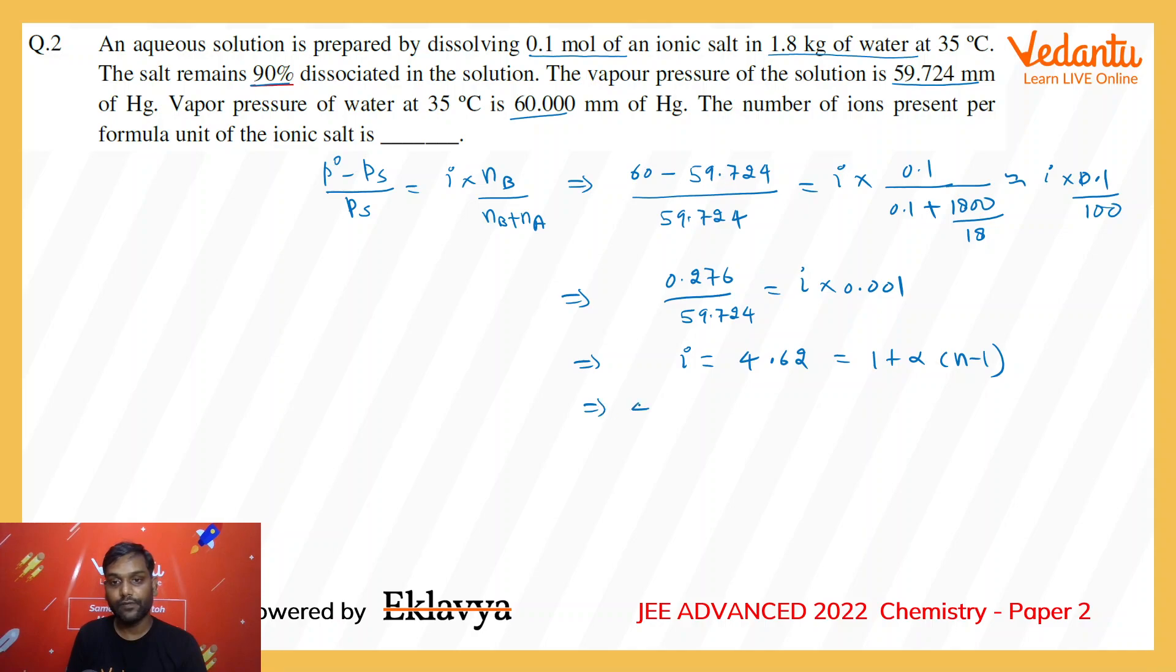Putting the values, 4.62 = 1 + 0.9(n - 1). From this, on solving, n comes out to be 5. So there are 5 ions present in 1 formula unit of the ionic salt. The correct answer is 5.